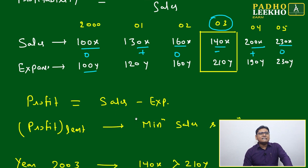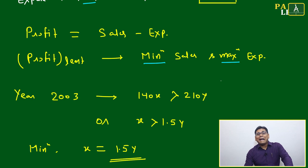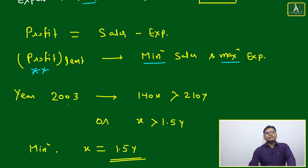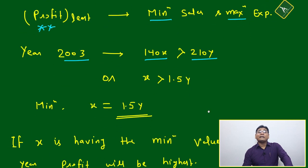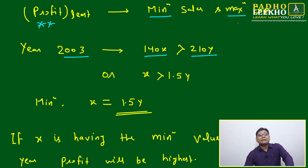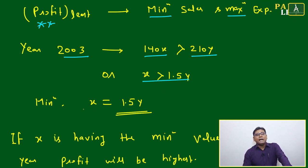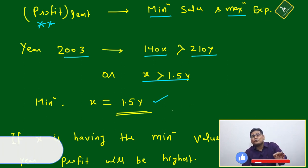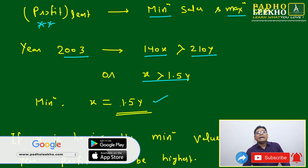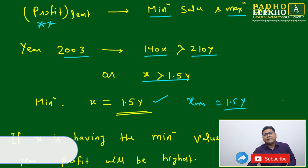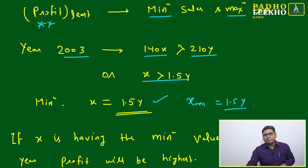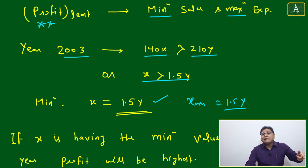For least profit, the condition is: in year 2003, sales must still be greater than expenses, i.e., 140x > 210y, which gives x > 1.5y, or x ≥ 1.5y at minimum. This is the minimum value of x relative to y needed to keep the company in profit every year. For example, if y = 5, then x minimum = 7.5. More than that is possible and will increase profit, but x must be at least 1.5y to ensure no loss occurs in 2003.